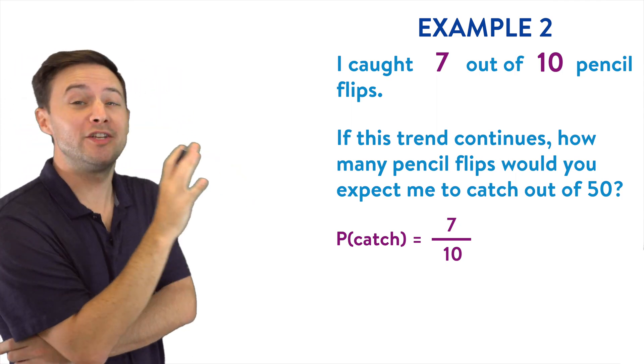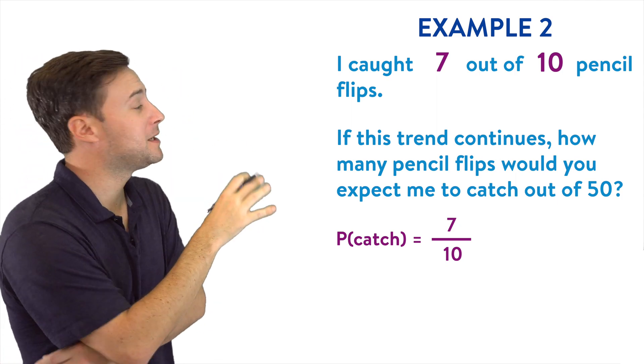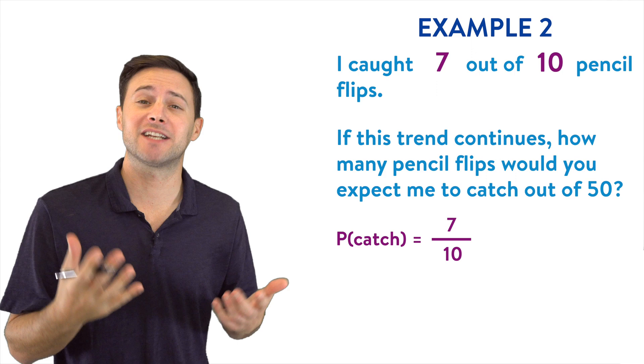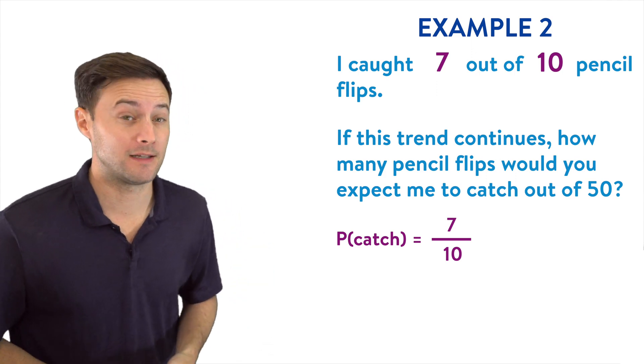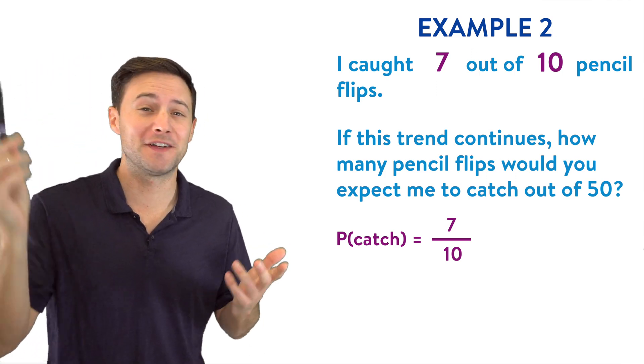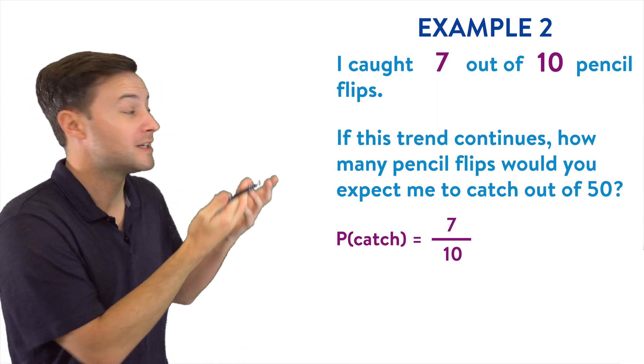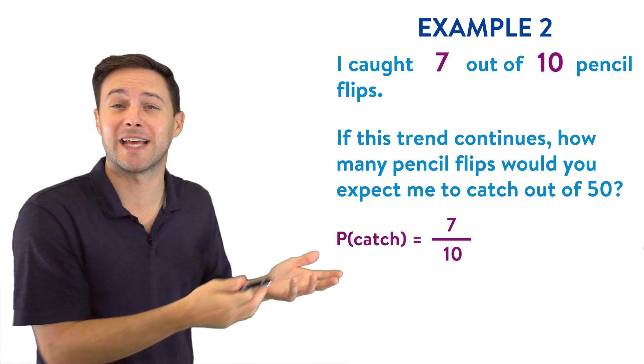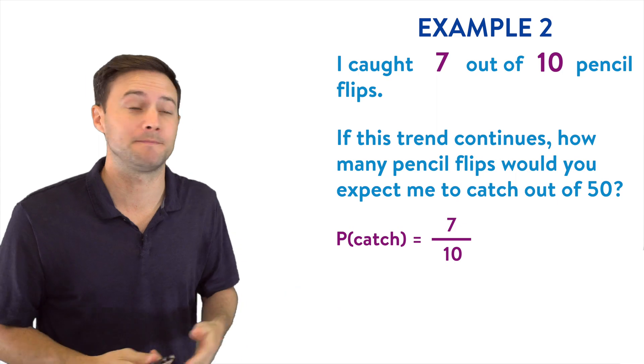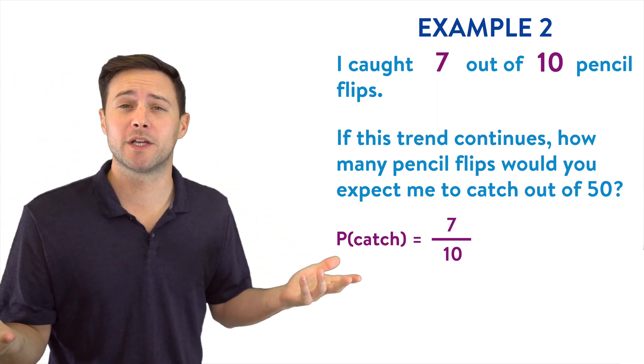Now we need to use that to help me predict how many catches I would get out of 50. I don't want to sit here and do 50 pencil flips and count all of them. I want to use the information from doing the 10 to make it hopefully a good prediction. So a couple of different ways we could do this.